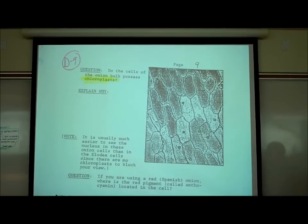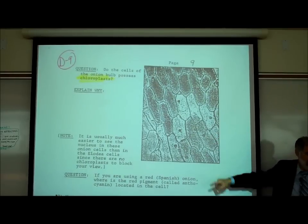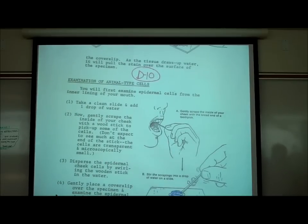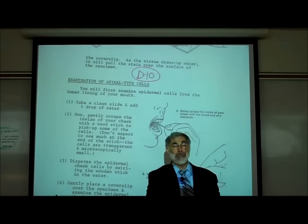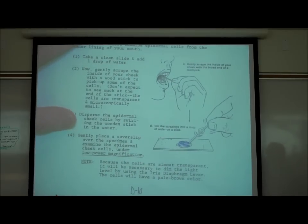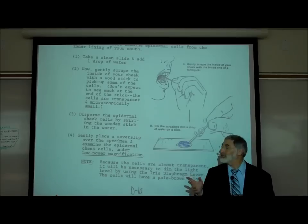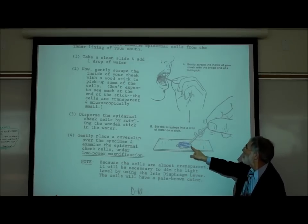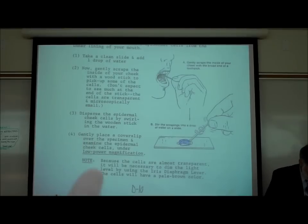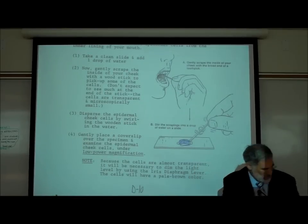But the onion did have the rectangular shape and cell wall. If you saw it, great — if not, you'll have a chance today. On page D10, we wanted you to look at some cheek cells. For all future labs, you're supposed to actually read the instructions. You scrape the inside of your mouth gently, take the stick, swirl it in some water you've placed on the glass slide, then place a cover slip over it, as shown on D11.